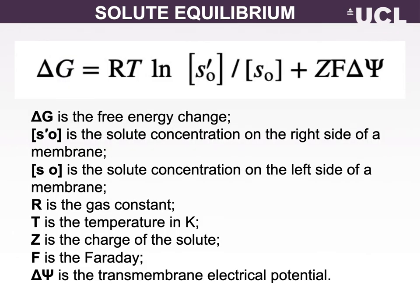The driving force for transmembrane solute movement by simple or passive diffusion is determined by free energy change. Solute movement will continue until the energy change is zero. If energy change is negative, solute movement is left to right and is favourable. If energy change is positive, solute movement is right to left — it is unfavourable in the left-to-right direction, or energy must be added for the solute to go from left to right.